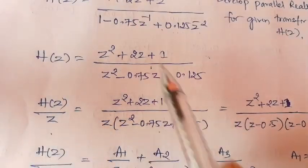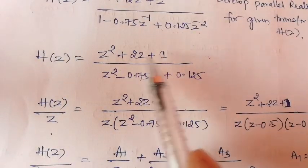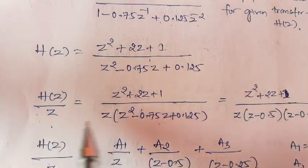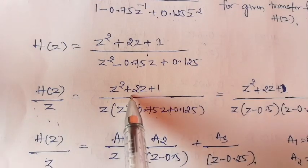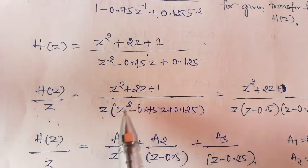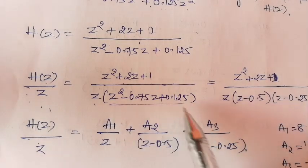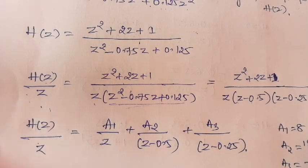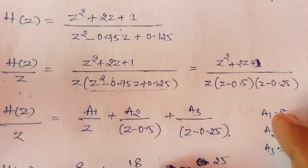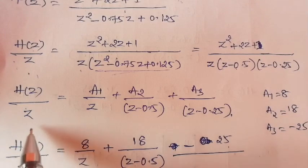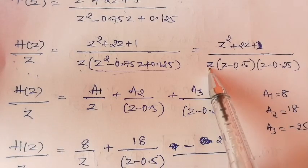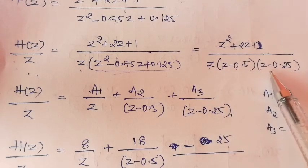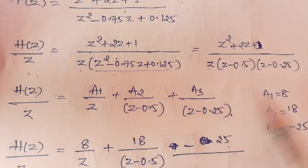After simplification, we express H(z)/z. Multiplying denominator terms on both sides by z, we get H(z)/z equal to (z² + 2z + 1) divided by z times the denominator. Factorizing, we get roots z minus 0.5 and z minus 0.25. So H(z)/z has three poles: z = 0, z = 0.5, and z = 0.25.